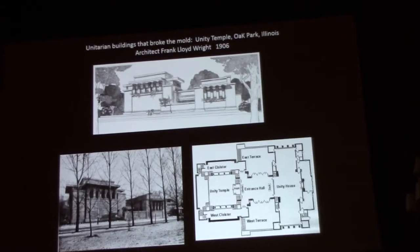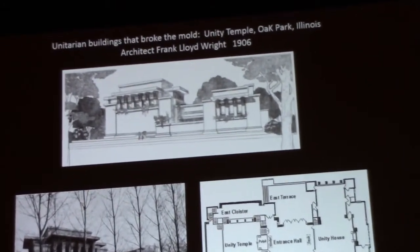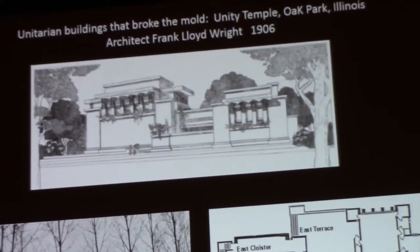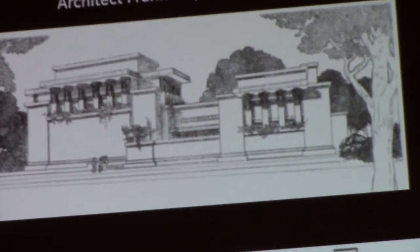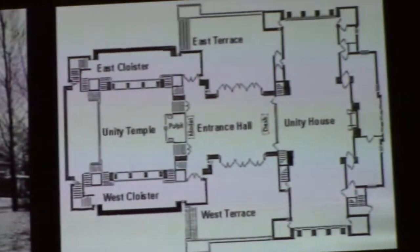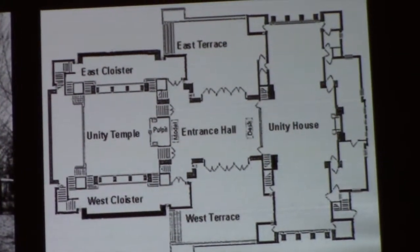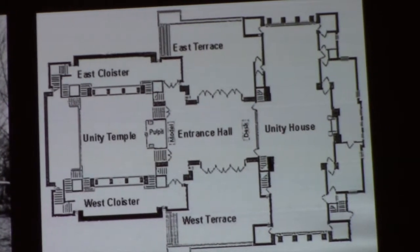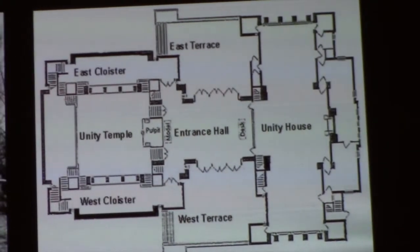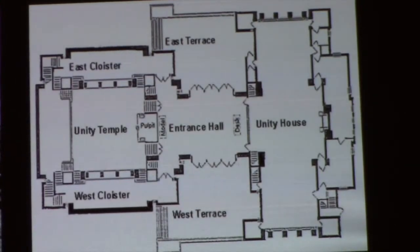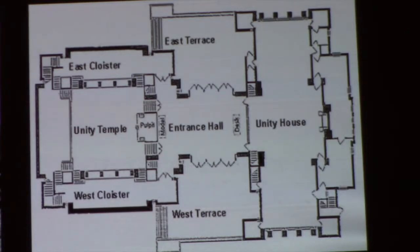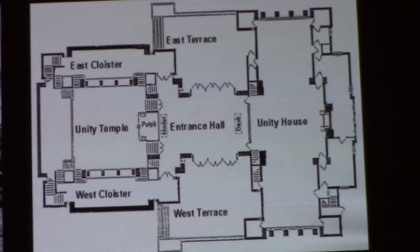It's a religious building by its function, but it doesn't have any of the overt religious images that we associate with churches in this country. The plan on the lower right is in two parts. Unity Temple is the sanctuary — a very simple square form — and then it connects to what's called the Unity House, which is their social wing and classroom wing. You enter in the center; the entrance hall is in between, entered through two terraces that come in off to either side.